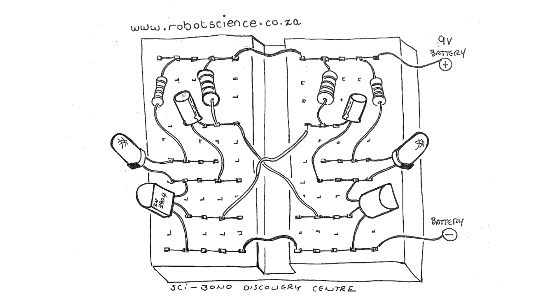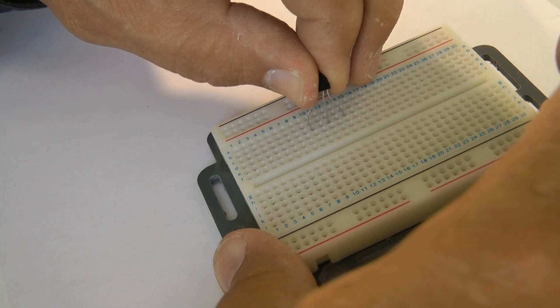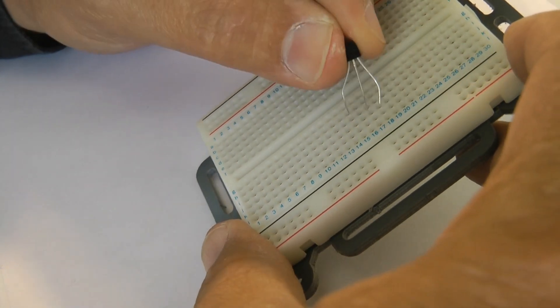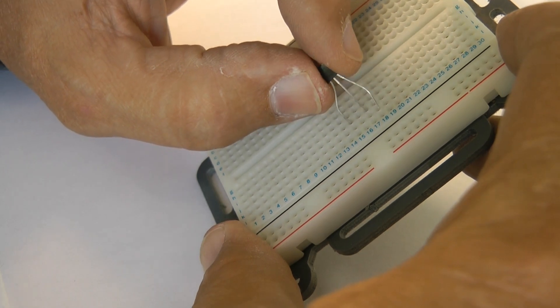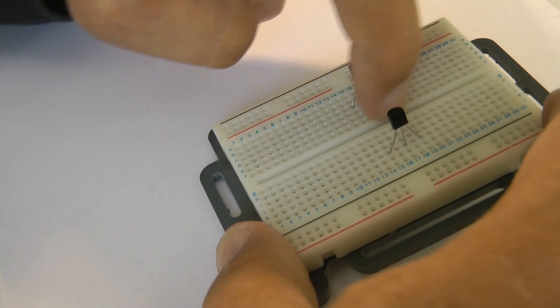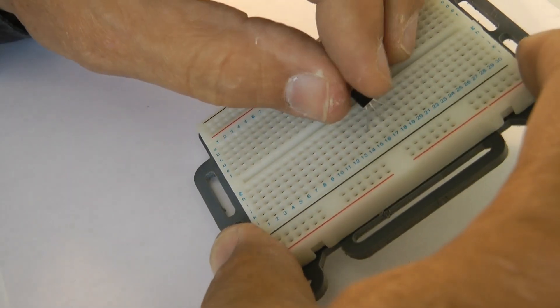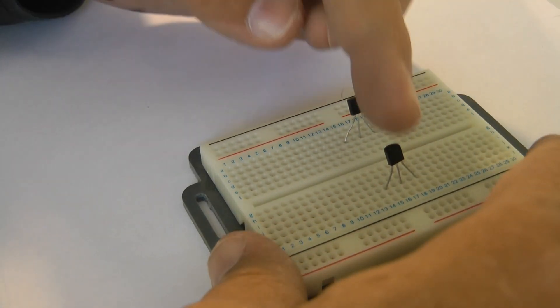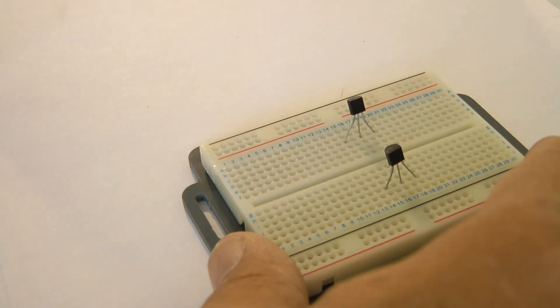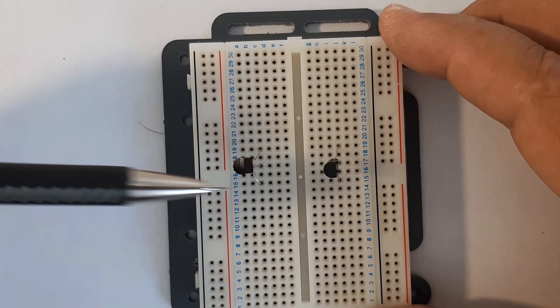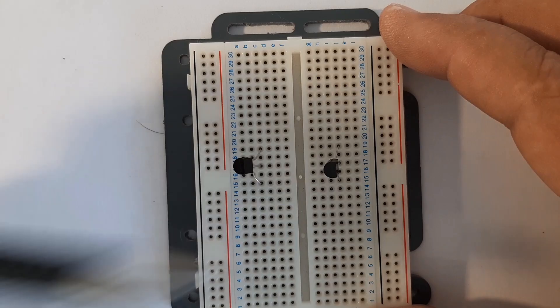You want to put the transistor in like this. We're going to place another transistor on the other side of what I call the Grand Canyon. This line down the middle of the breadboard breaks the electrical connections there. Notice both transistors are facing that way, in other words the flat sides is there and the round sides is there.